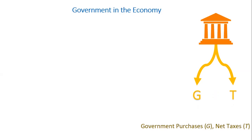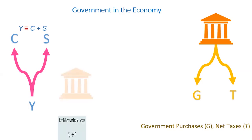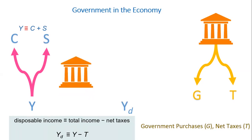We know that with output income, we can do two things with it: consume it or save it. This is why output income Y is equal to C plus S. Adding net taxes and government purchases leads to the disposable or after-tax income, YD, which is equal to Y minus T.